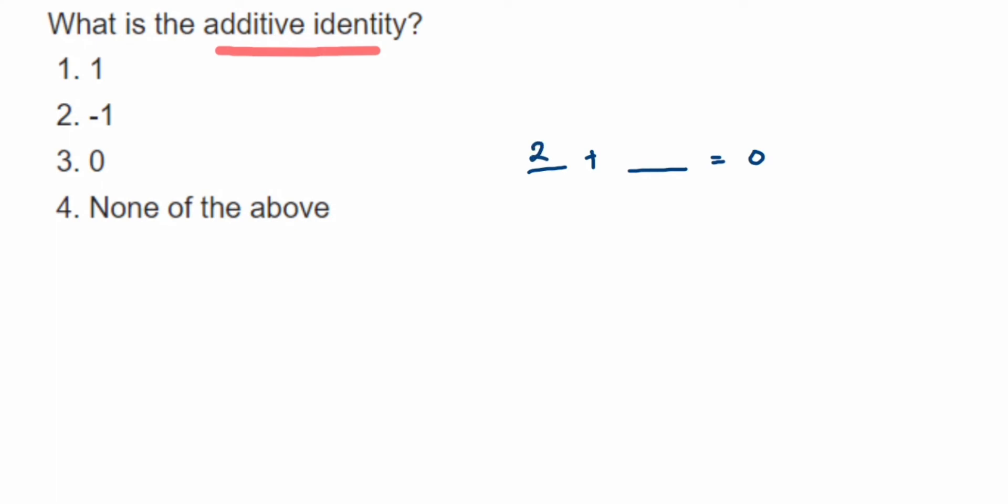It's minus 2. So minus 2 is the additive inverse of 2, and additive identity is zero. Your ultimate answer should get zero, and the number you're adding here will be the additive inverse.